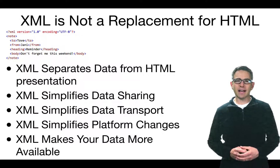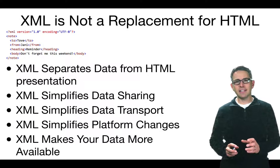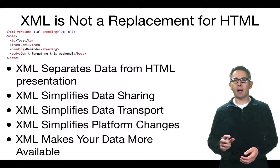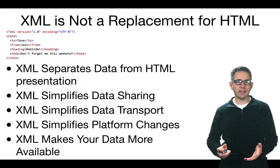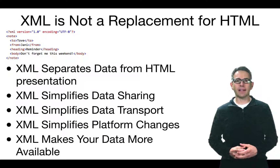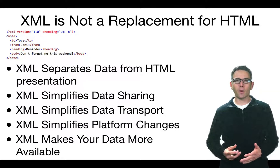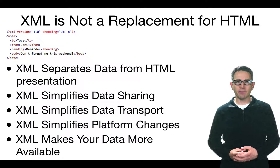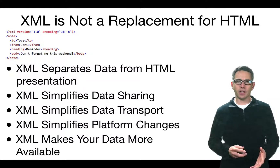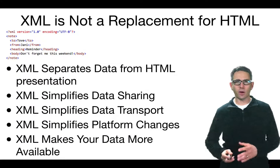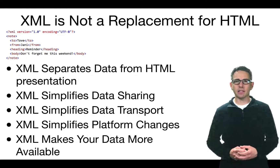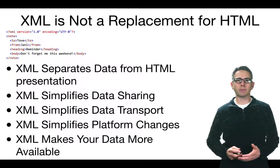XML was designed to separate data from presentation. The data can be transported as an XML file, and another program such as a browser can render that data in any way desired. XML simplifies data sharing by enabling structured data to be shared in a system and platform-independent way, simplifies data transport, simplifies platform changes between systems like OS X and Windows, and makes data more available because more platforms can use it.